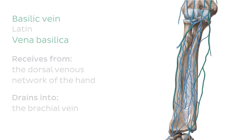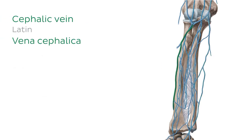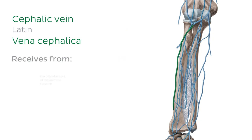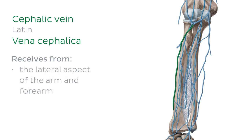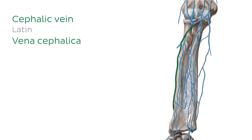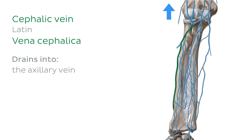On the other side of the forearm we have the cephalic vein, which gets its name from the fact that it runs from the hand towards the head — cephalus being Greek for head. It receives blood flow from the lateral aspect of the arm and forearm as well as the dorsal venous network of the hand, and goes on to join with the axillary vein further up the arm in an area called the clavipectoral triangle, to become the subclavian vein. Like other superficial veins, it's a good vein for drawing blood.